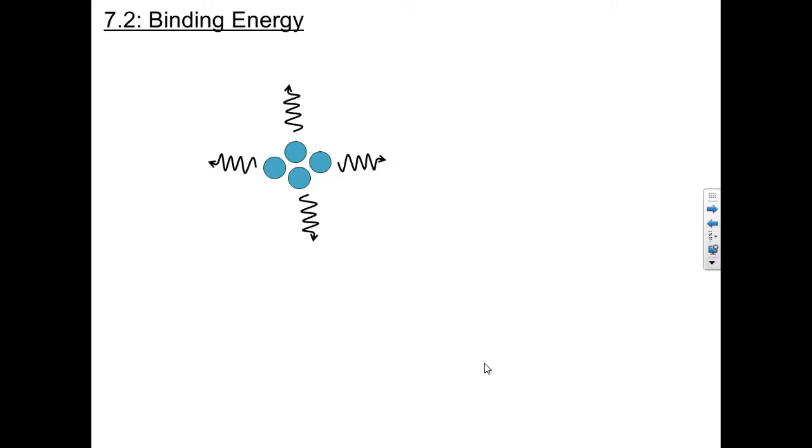Now let's make up a number and say that each nucleon has lost three mega-electron volts of energy. And because they've lost that energy, they are now bound together. So this amount of energy loss, which is needed to form a bound atom, is called the binding energy.